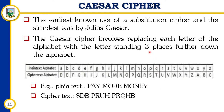Caesar cipher is not a very secure cryptosystem, mainly because there are only 26 possible keys to try out. An attacker can carry out an exhaustive key search with limited computational resources and be able to decrypt your information. Anyone with knowledge of the Caesar cipher will be able to decrypt your ciphertext.